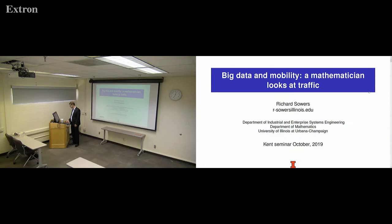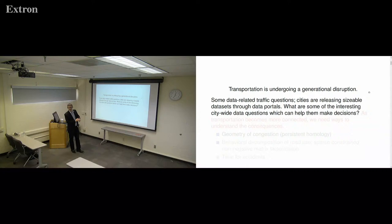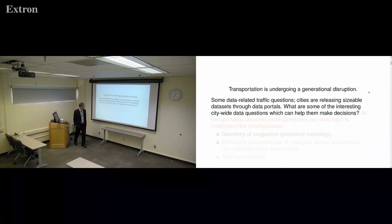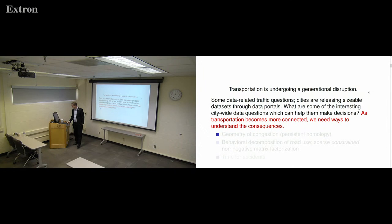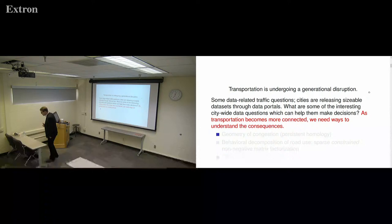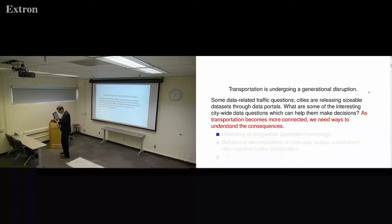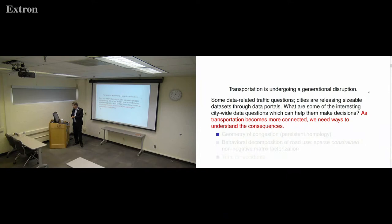Transportation is undergoing a generational disruption, and there are some data-related traffic questions. Cities are releasing sizable datasets through data portals — what are some of the interesting citywide data questions which can help them make decisions? We're going to be seeing massive changes in traffic behavior. Can we develop tools to understand and compare cities, to understand what's going right and what's going wrong? Can we help one city compare itself to a different city as transportation becomes more connected?